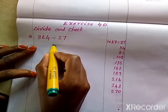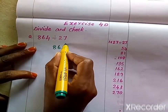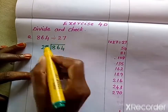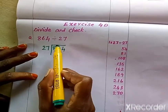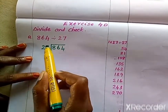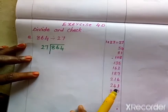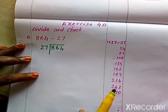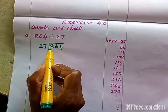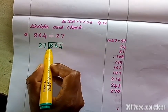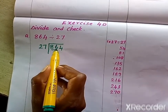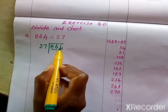So we can write like this. Here we have to divide using the 27 times table, so I have written the 27 times table here. First look at the first digit, 8. Since 8 is smaller than 27, we take the first two digits together — that is 86.